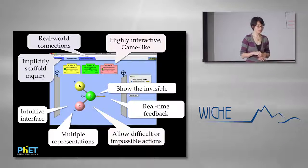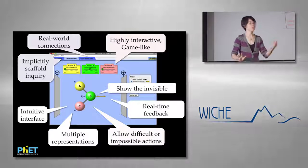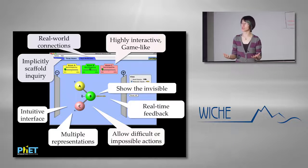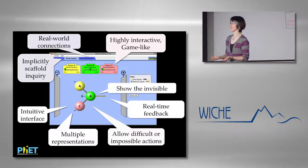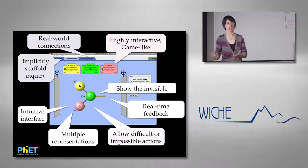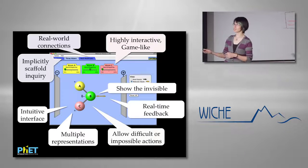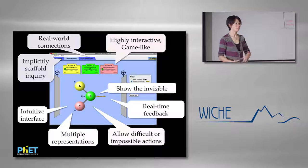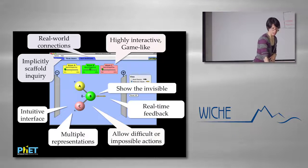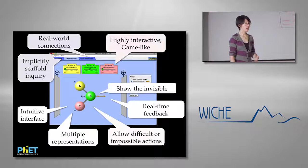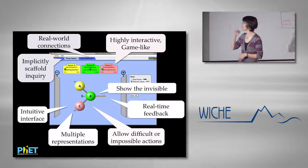Sometimes we use separate screens for scaffolding. Color Vision has two different concepts on two different screens. Wave on a String has one screen, but we choose very carefully what the startup state is — the wave isn't going immediately, you have to activate it. The parameters displayed and the absence of a lot of numerical values at startup are very intentional, finding a starting point that's both interactive and engaging but not intimidating.